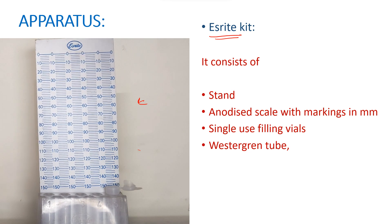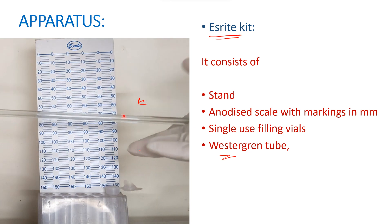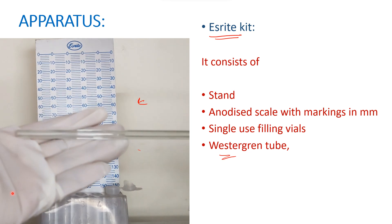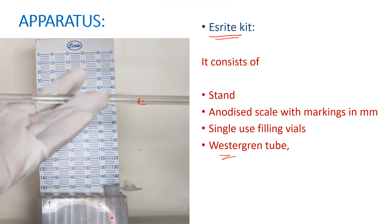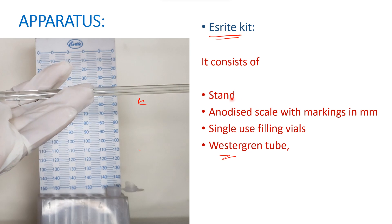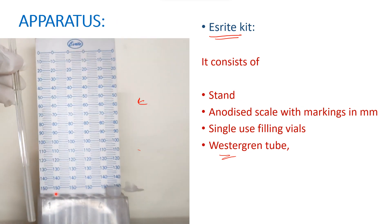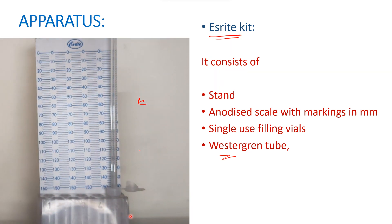The most important component is the Westergren's tube, which is a thick glass tube open at both ends with a ground end. It is this ground part that goes inside the single-use filling vials. The tube itself has no markings because there is an entirely different scale for it. The ground tip fits snugly onto the single-use vial.